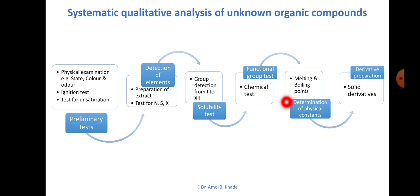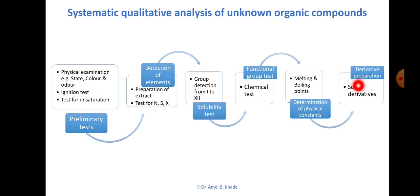If our sample is solid we find the melting point; if our sample is liquid we go for boiling point determination. In this video we will mainly focus on how to find the boiling point of a liquid sample, covering theoretical aspects, factors affecting boiling point, and the experimental setup using Thiel's tube. We can also prepare a derivative if we are unable to identify the compound properly.